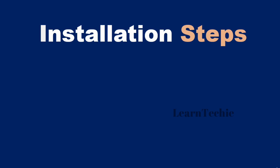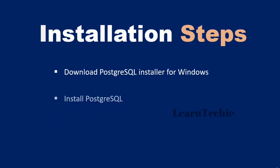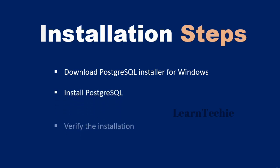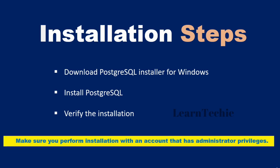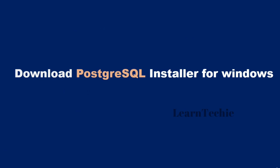Let's take a look at the steps we are going to follow to complete the installation. We are going to start by downloading the PostgreSQL installer for Windows. Once we've downloaded it, we'll install PostgreSQL and then verify the installation. If you are running Windows 8 or Windows 10, you will need to install PostgreSQL on an account that has administrative privileges.